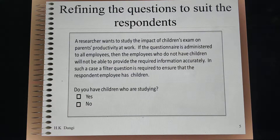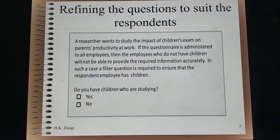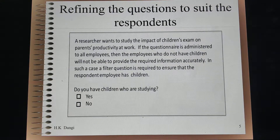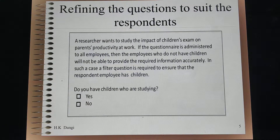One way of refining this is to use a filter question. For example, if you want to study the impact of children's examinations on parents' productivity at work, and the questionnaire is administered to all employees, then employees who do not have children will not be able to provide accurate information, resulting in errors in the response pattern. A filter question is required to ensure the respondent has children — for example, 'Do you have children who are studying?' If the answer is no, that respondent is excluded.